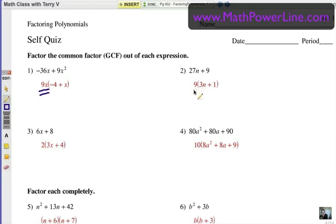Number 2 is 9, greatest common factor there, on the outside leaving inside 3n plus 1. Number 3, the only common factor is a 2, so you can divide each number by 2 and get 3x plus 4.